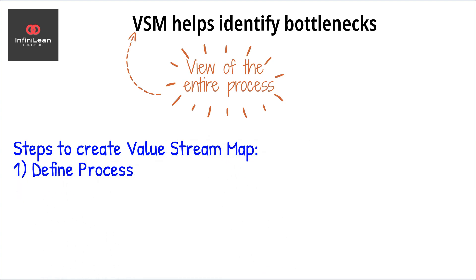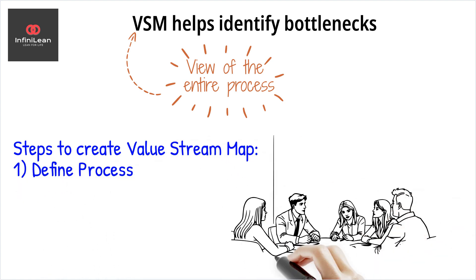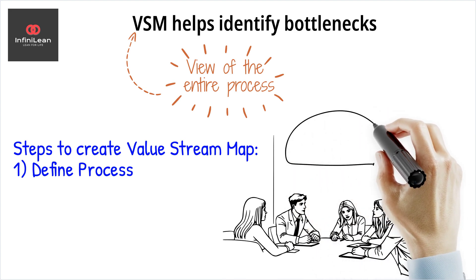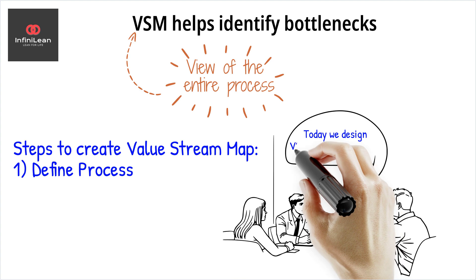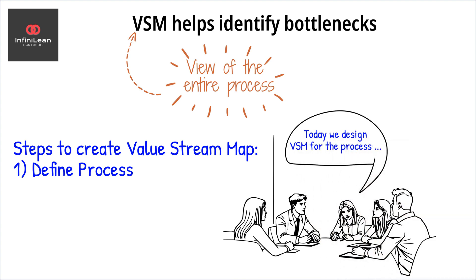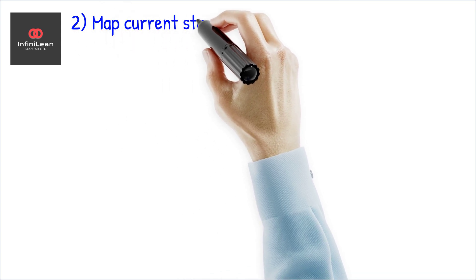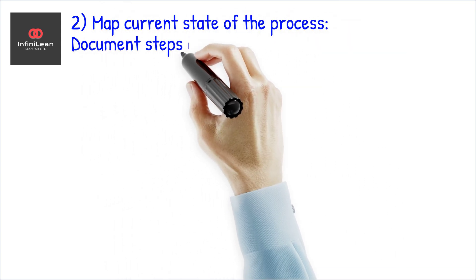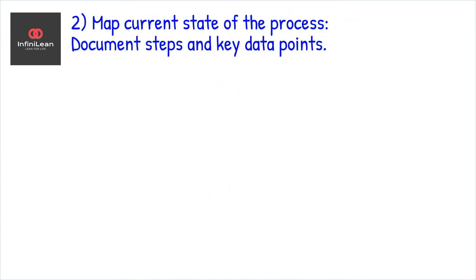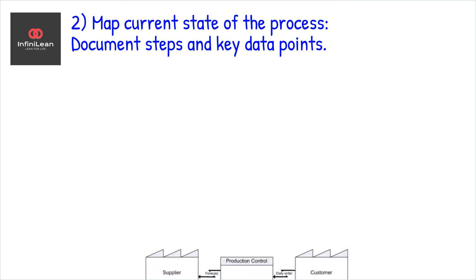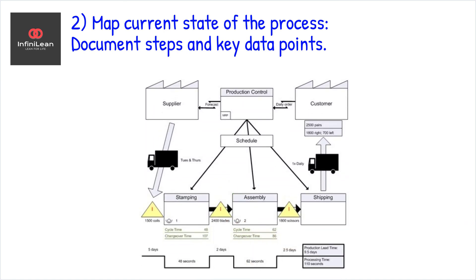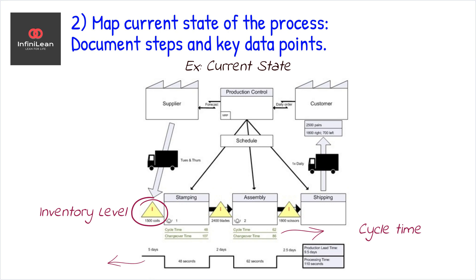The first step in creating a value stream map is to define the scope of the mapping activity. This involves selecting a specific product or service to focus on. Once identified, the next step is to map the current state. Here, you document every step in delivering the product and highlight key data points like cycle time, lead time, and inventory levels. This map serves as a baseline for understanding where inefficiencies lie.